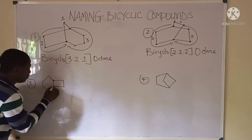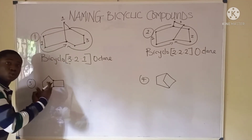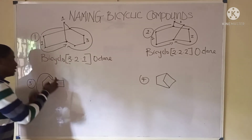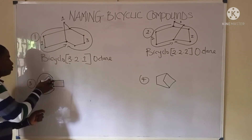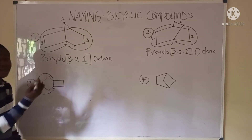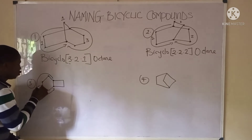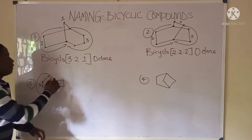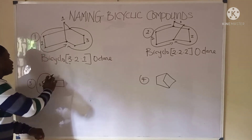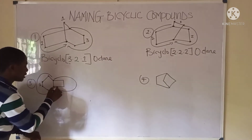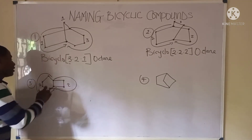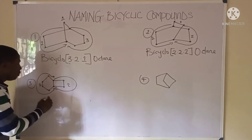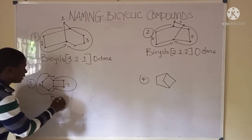Moving to the third example, the two bridgehead carbons are located — these are the carbons joining the two cyclic compounds. Moving from one bridgehead carbon to the other from the left, we have four carbons. Moving from the right bridgehead carbon to the other, we have two carbons. There is no carbon joining the two bridgehead carbons directly, so we record zero.